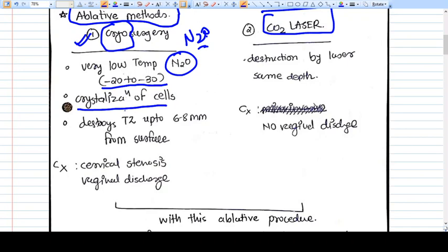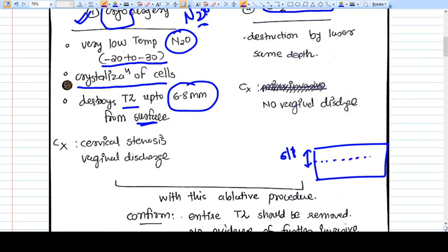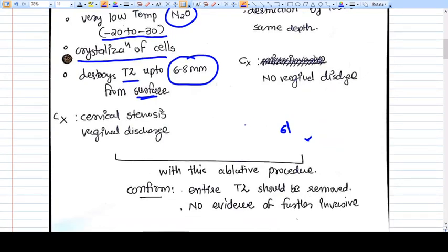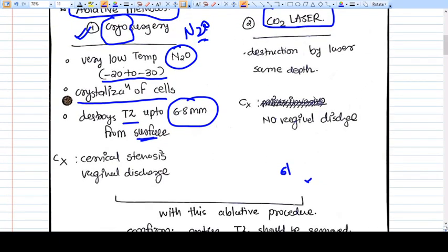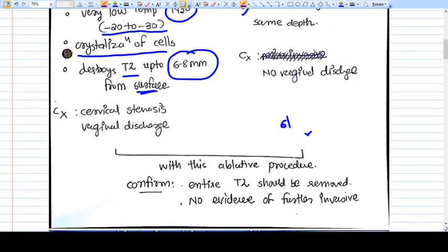Once they crystallize the cells, they are destructed. They destroy TZ up to 6 to 8 mm from the surface. With the CO2 laser we do destruction of the cells or tissues by using the laser.